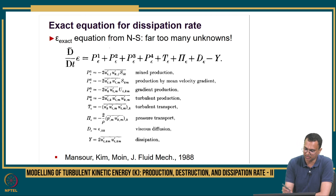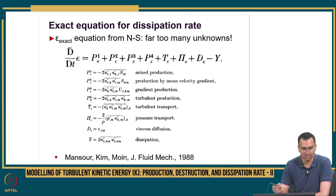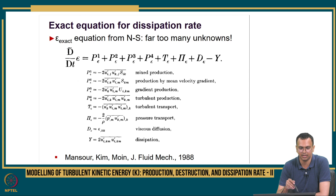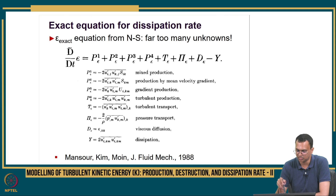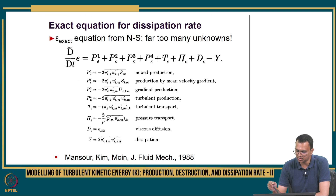The epsilon exact equation starts from first principles, that is Navier-Stokes. On the left-hand side, you have the standard material derivative for epsilon, and there are 4 production rate terms. You also have the turbulence transport T_epsilon, pressure transport or pressure diffusion rate π_epsilon, and d_epsilon, the viscous diffusion rate.